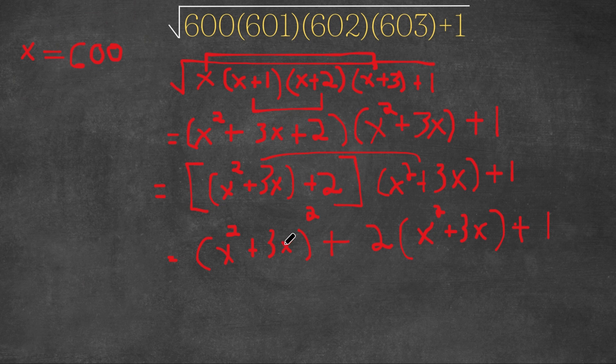So now that we have this, let's say that u is equal to x squared plus 3x. Then this would turn into u squared plus 2u plus 1. And this is equal to u plus 1 squared. This is equal to u plus 1 squared.